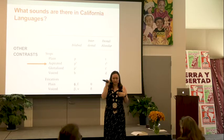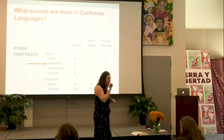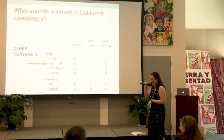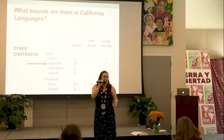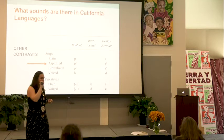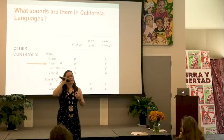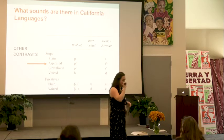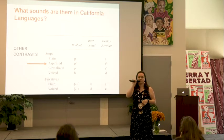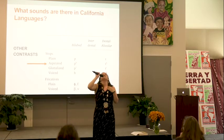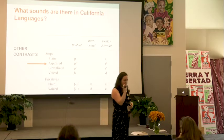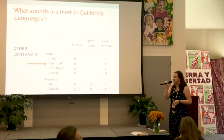I worked with a Mayan language — Yucatec Mayan — in undergrad doing some field methods. Instead of pushing up, they go down — there's negative air pressure and things go in. The word for corn, I think, is... 'cob.' You can hear it — there's an inflow of air. Nobody in California does that, so it's not included here, but I wanted to give you a sense of the possibilities.